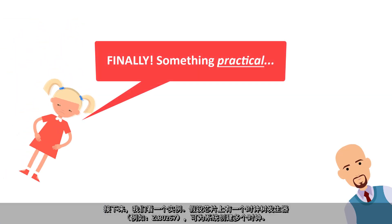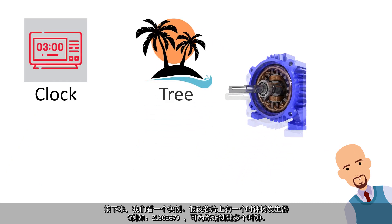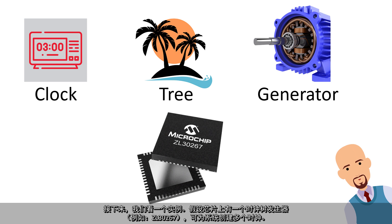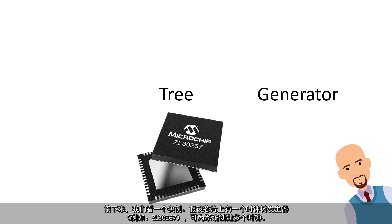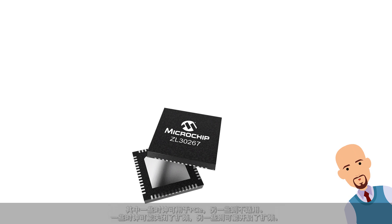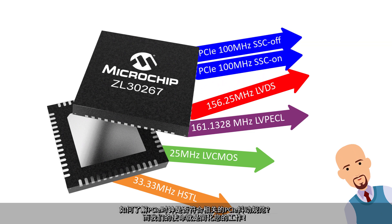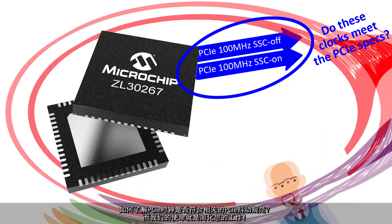Next, we will look at a practical example. Let's say that you have a clock tree generator on a chip, such as the ZL30267, creating many clocks for your system. Some clocks may be for PCIE, others may not be for PCIE. Some may have spread spectrum off, others may have spread spectrum on.